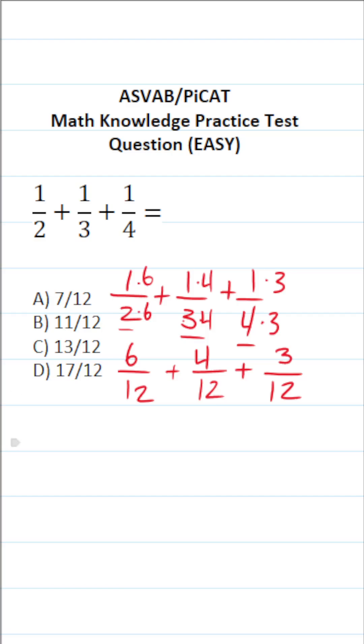Now that we have a common denominator, here's how we add these fractions. Our denominator is not going to change, but we're going to add our numerator. So it's going to look like this: 6 plus 4 plus 3. 6 plus 4 is 10. Plus 3 is 13. So this is 13 over 12.